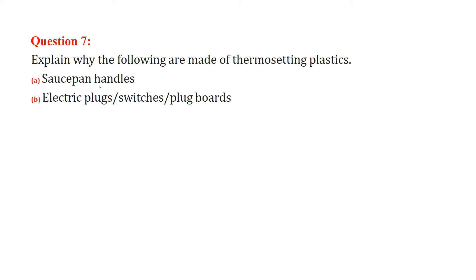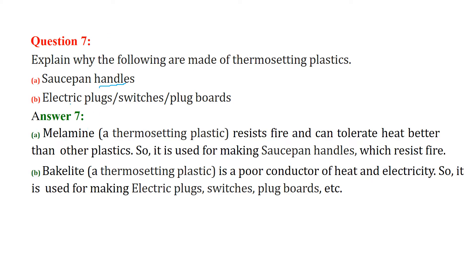Explain why the following are made of thermosetting plastic. For saucepan handles, melamine — which is a thermosetting plastic — is used because it resists fire and can tolerate heat better than other plastics. Bakelite is a poor conductor of both heat and electricity, which is why it is used for making electric plugs, switches, and plug boards.